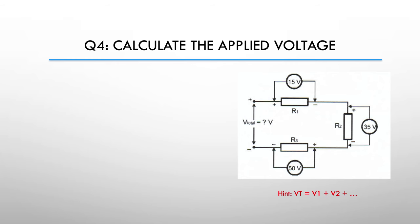Again, the hint is Vt is equal to V1 plus V2 etc. And our answer is volts total is 15 plus 35 plus 50 equals nice neat 100 volts.